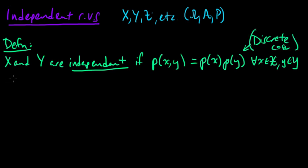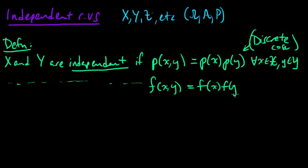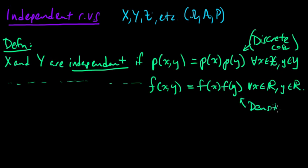And we have something very similar looking for x in the continuous case, except we replace this with the density — the joint density of x and y — and it equals the product of the marginal densities. That's for all real values that x and y can take. These values were countable in the discrete case, and this one is the case when they have a joint density.